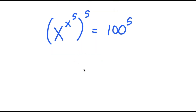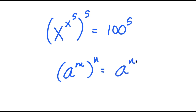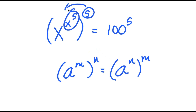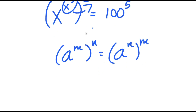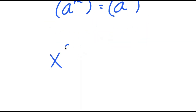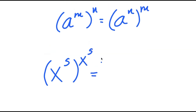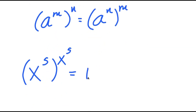Now, if I have something in the form a to the power of m to the power of n, this is the same thing as a to the power of n to the power of m. So x to the power of x to the power of 5, all to the power of 5 — I can switch the places of 5 and x to the power of 5, giving x to the power of 5 to the power of x to the power of 5, equal to 100 to the power of 5.